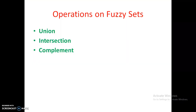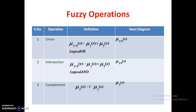As we know, the operations are only three: union, intersection, and complement. Let us see how these will be performed on fuzzy sets. For union, mu of A union B of x is equal to mu A of x OR mu B of x. This shows the logical OR operation.